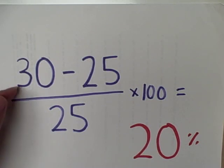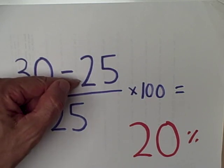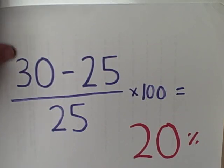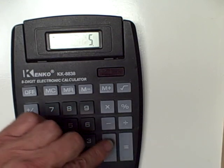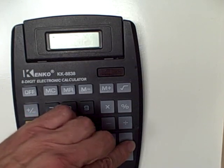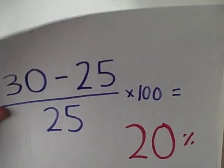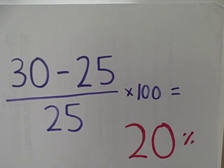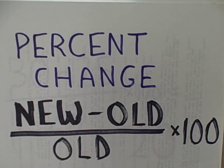Now we look at 30, which is our new figure this time, minus our old figure — our base year figure of 25 — that we put here and here, and we calculate this out. We take 30 minus 25 equals, divide by 25 equals, times 100 equals, and now we have a percentage increase of 20% because we have a different base year. So that is the formula for percentage change: new minus old, divide by old, times 100.